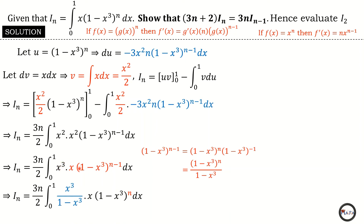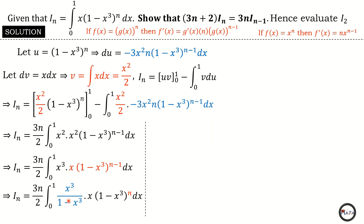Rewriting the integral: x cubed is already there, and I replace (1 minus x cubed) raised to the power n minus one with (1 minus x cubed) raised to the power n divided by (1 minus x cubed). Considering just the integral sign with the black portion — x times (1 minus x cubed) raised to the power n — that represents I of n. Now I need to simplify x cubed divided by (1 minus x cubed) using a trick to avoid long division.